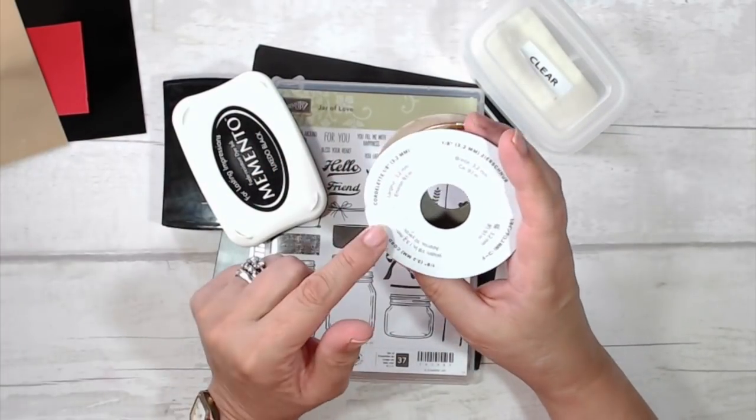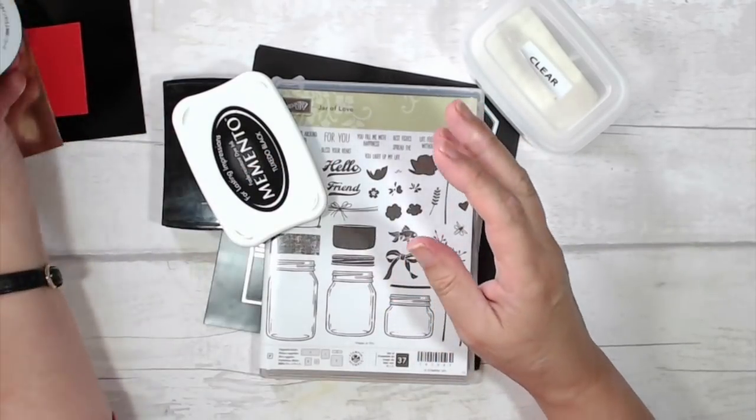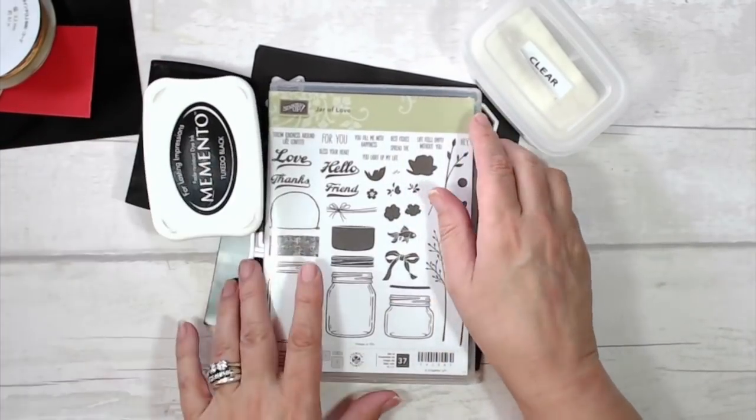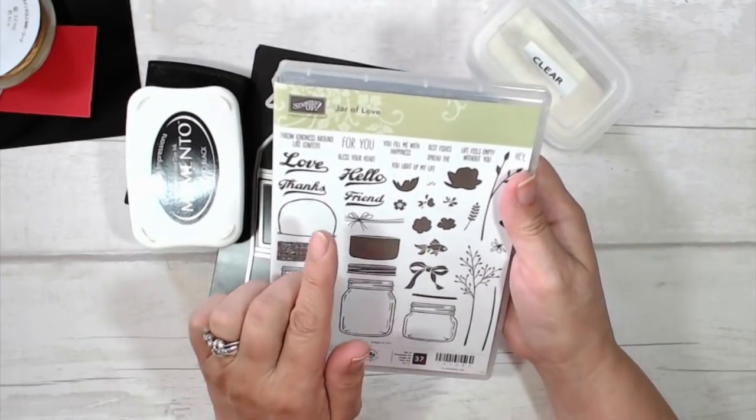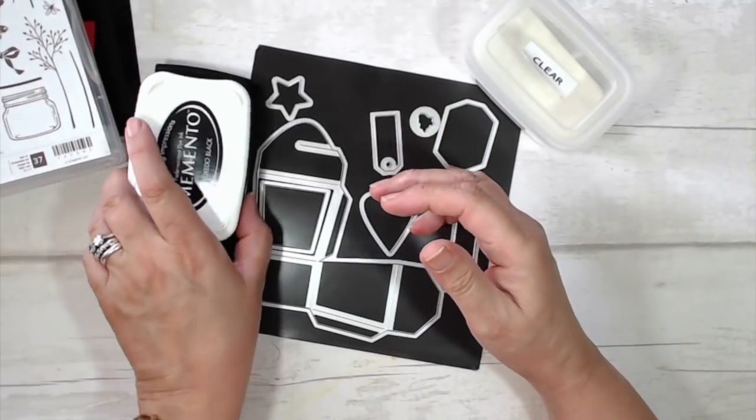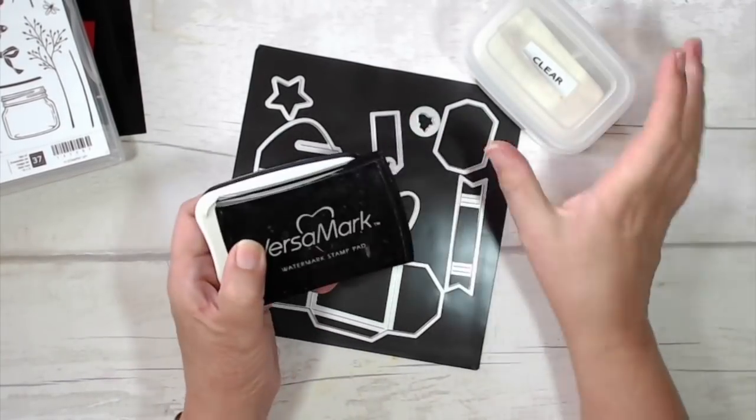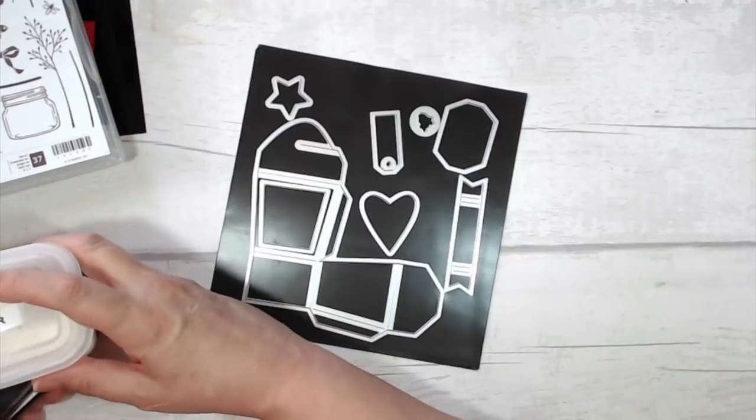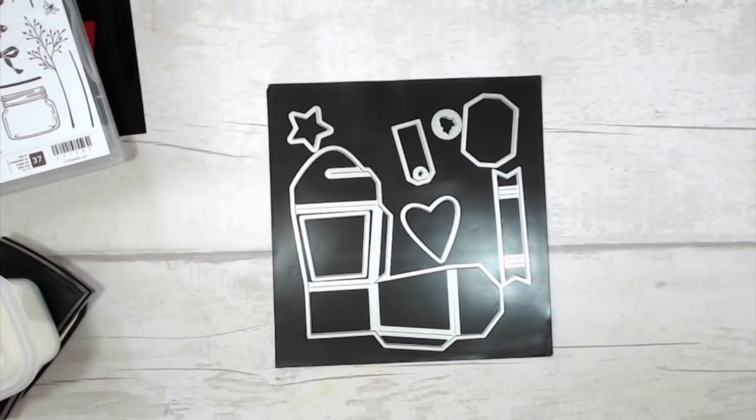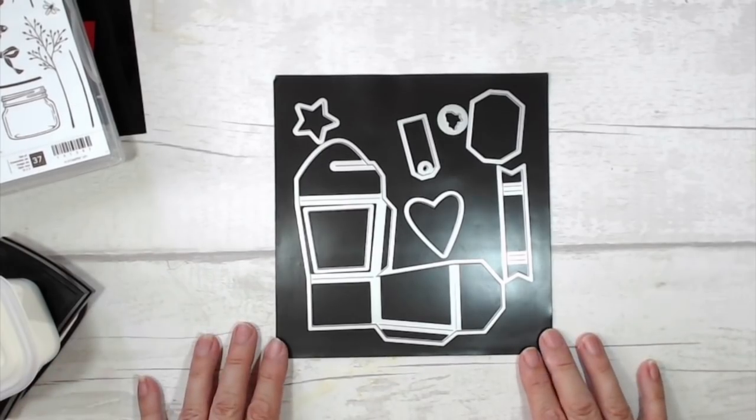I've got some of the one-eighth of an inch gold cord which is in the annual catalog. Stamping with a stamp from the Jar of Love set, I'm going to use Memento and Versamark and clear embossing powder, and of course I'm going to make my box out of the takeout thinlits.